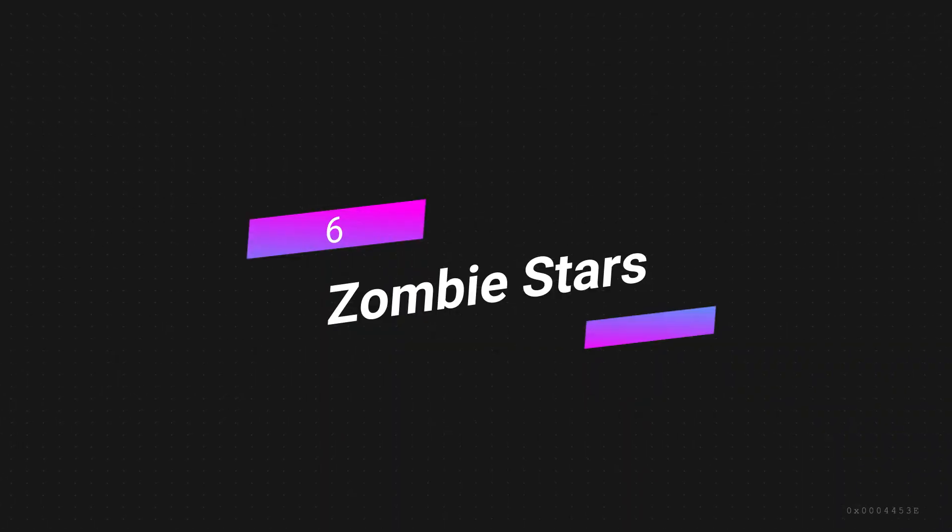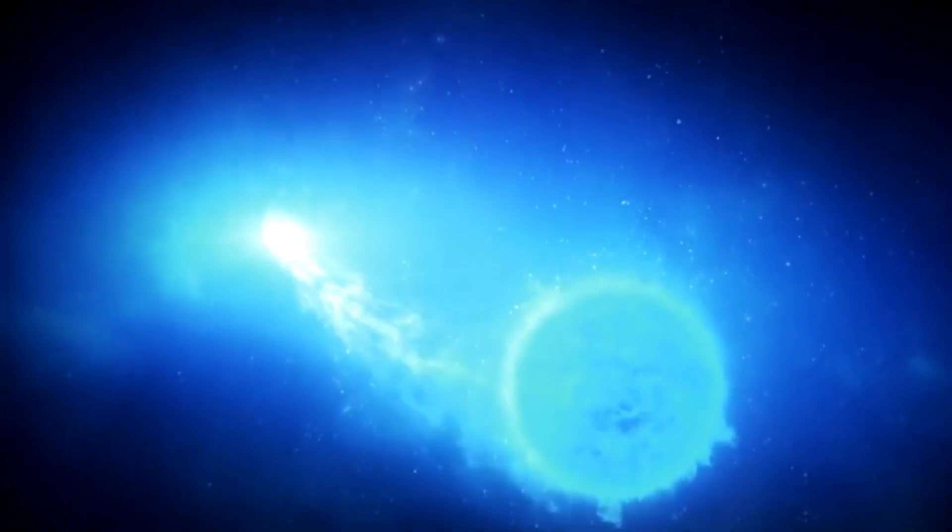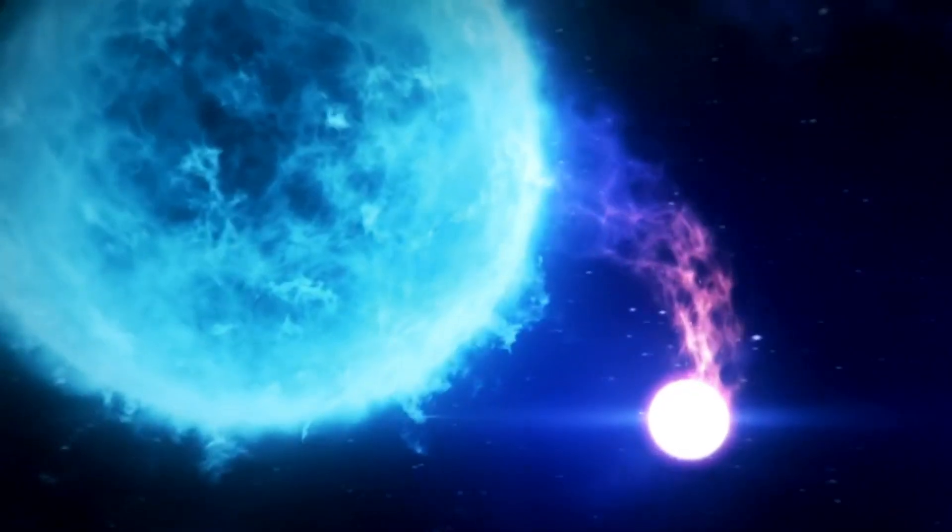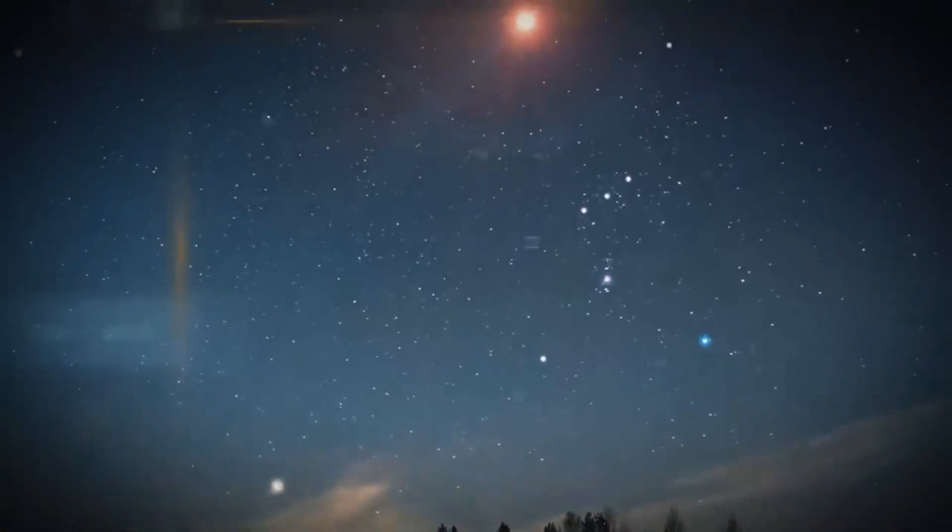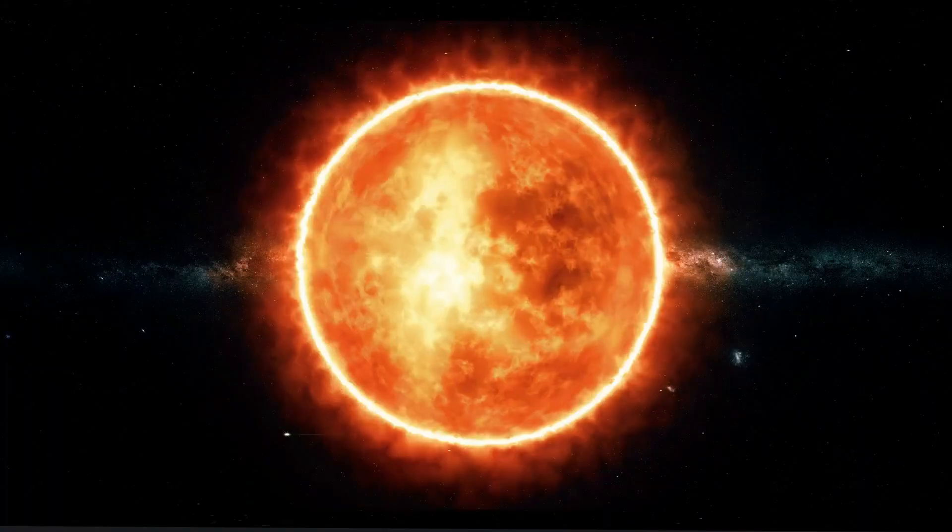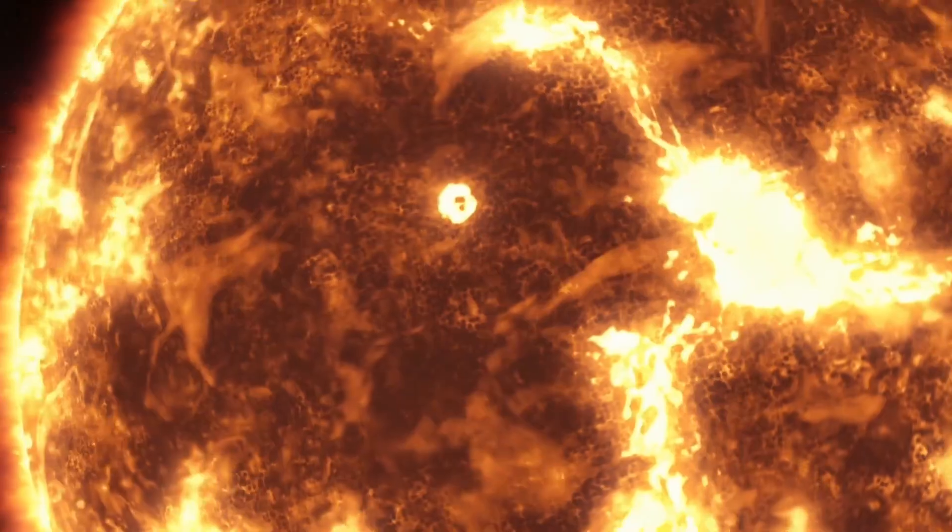Number 6: Zombie Stars. Everything that is living will die someday, and this includes everything in the universe. You may remember from science class that the death of a star is one of the most interesting things that can happen in the known universe. Every star we can see in the sky, including our own sun, has already died or will die at some point in the future.